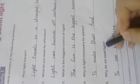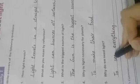What is the biggest source of light? The sun is the biggest source of light. Why is light necessary for plants? To make their food. Why do we need light? To see everything.